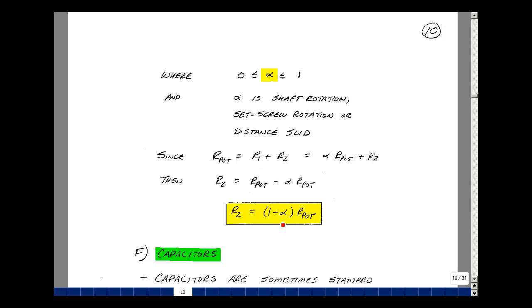If we're in the center position, alpha is a half, and we get R1 equal to R2. If we're a quarter of the shaft rotation, then this will be three quarters of the total pot resistance. So we have a nice formula for calculating equations in terms of our results as a function of shaft rotation.